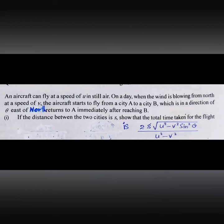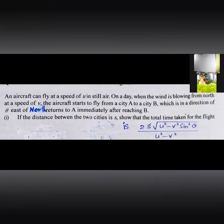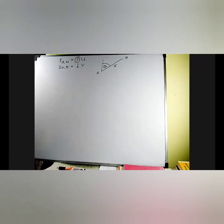The aircraft starts to fly from city A to city B, which is in a direction of theta east of north. First, we draw north through A because A is the starting point, then turn an angle theta to the east. The aircraft returns to A immediately after reaching B. The distance between the two cities is s. The question asks us to show the total time taken for the flight.